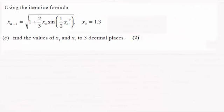Hi there. For this question, we've got to use this iterative formula with our first approximation x₀ = 1.3 to find two more values x₁ and x₂ to three decimal places.